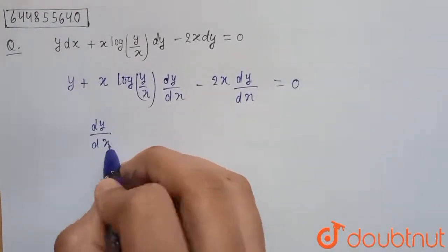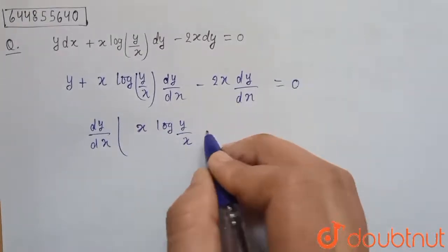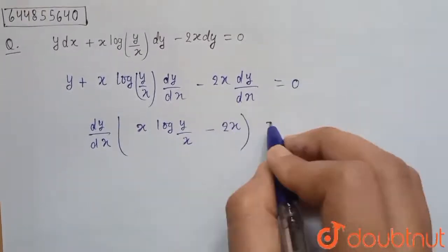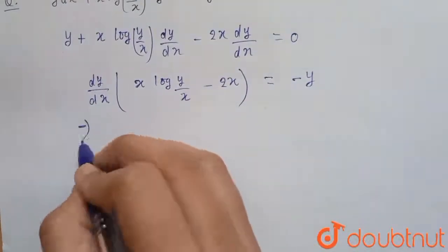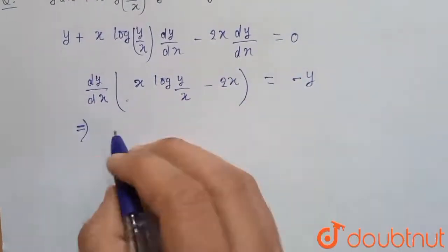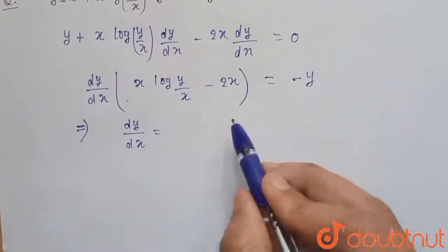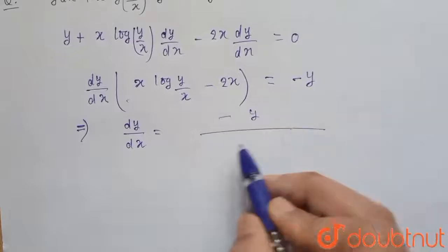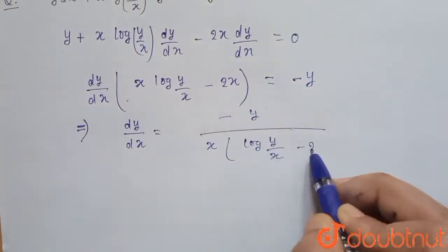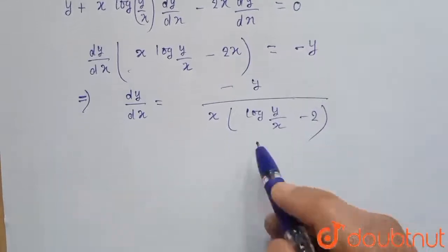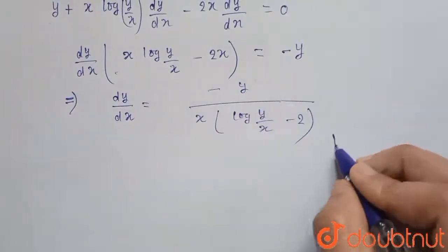Here we take dy/dx common, so we get x·log(y/x) minus 2x, and move y to the right-hand side to get dy/dx equals minus y divided by x·(log(y/x) minus 2). Now, this is a homogeneous equation.